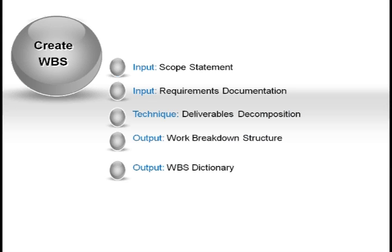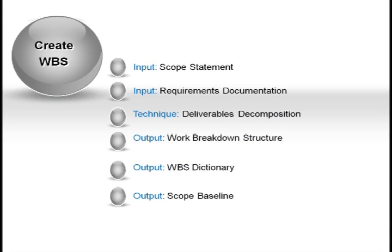Your program manager will likely be able to help you with this if it isn't obvious from your project framework. Once you have the work breakdown structure, WBS dictionary, and scope statement completed and signed off, you can save them as a baseline, enact change control, and start to manage scope as the project moves forward.